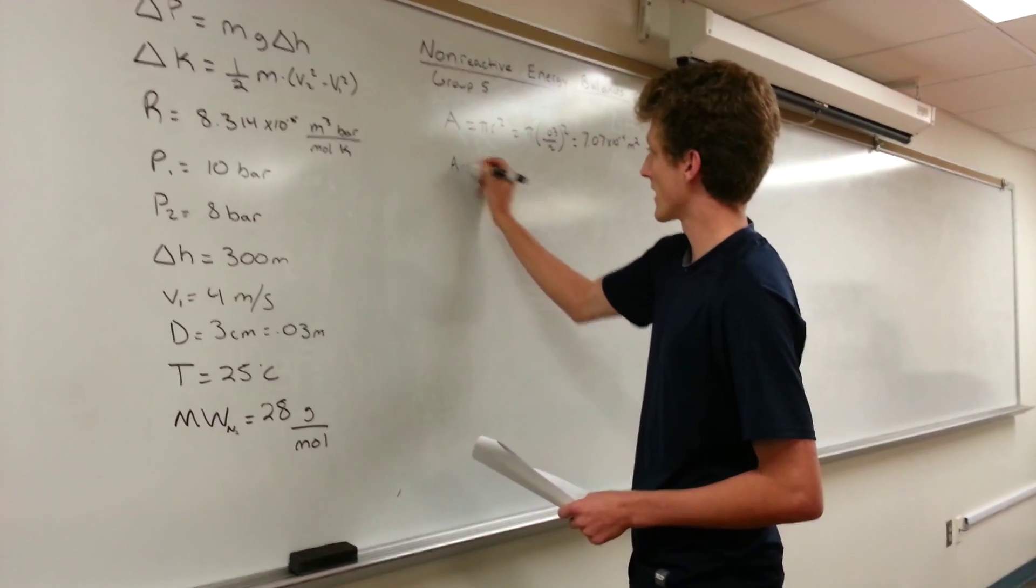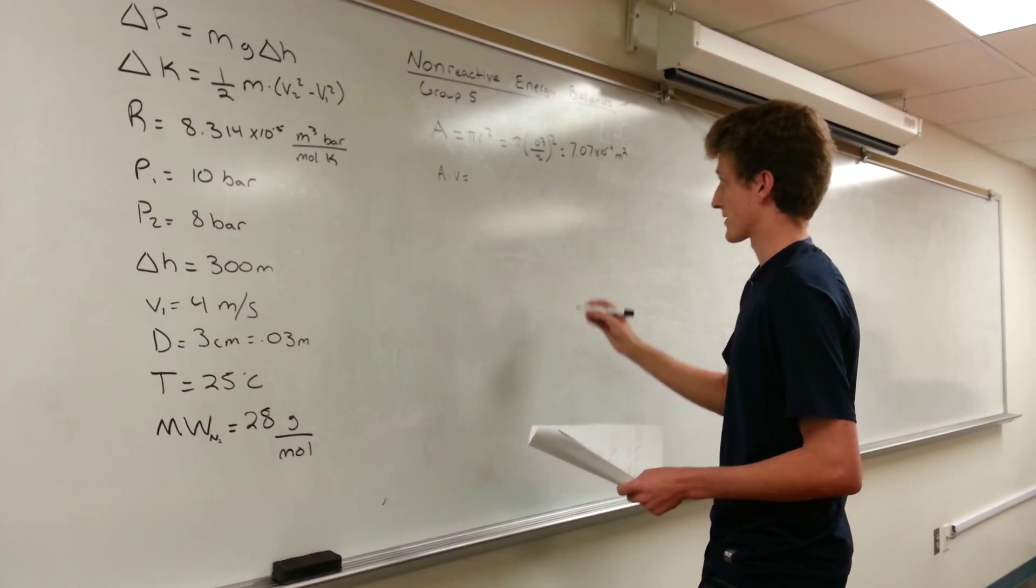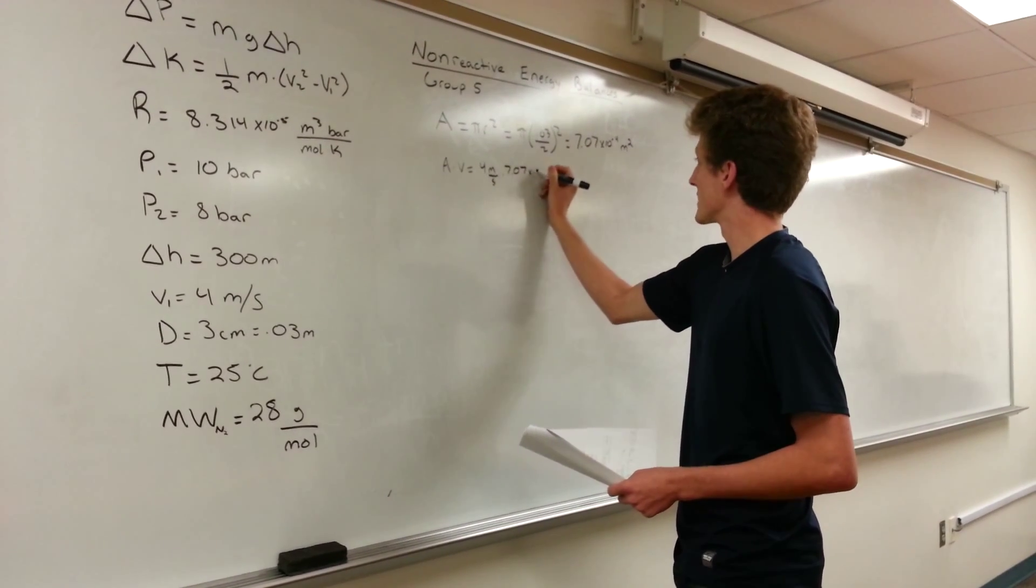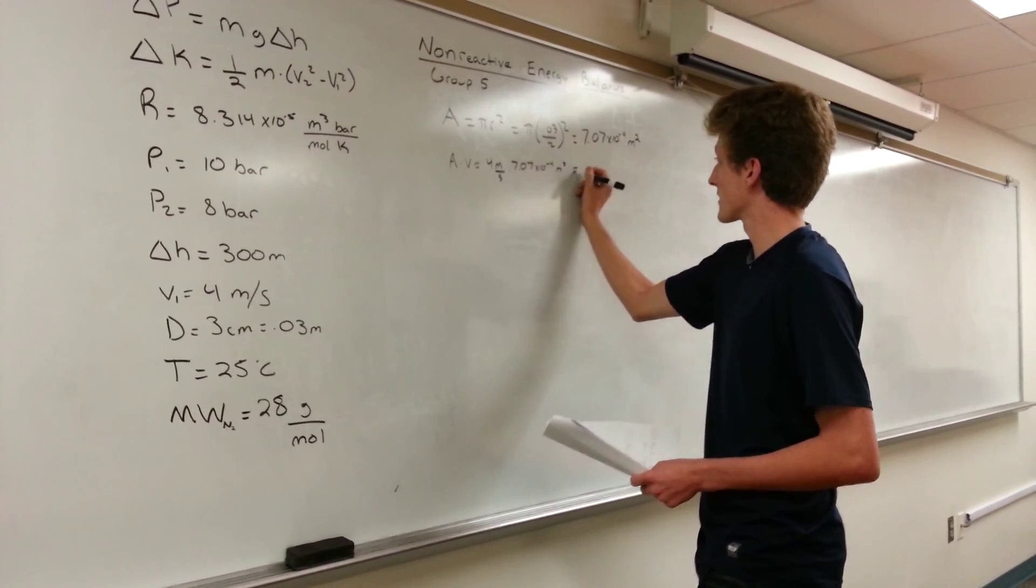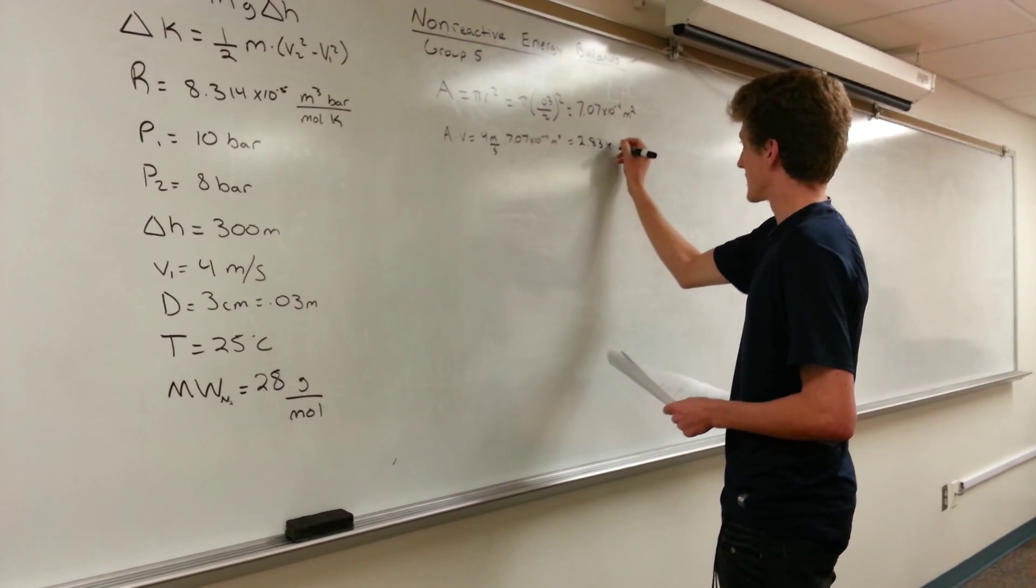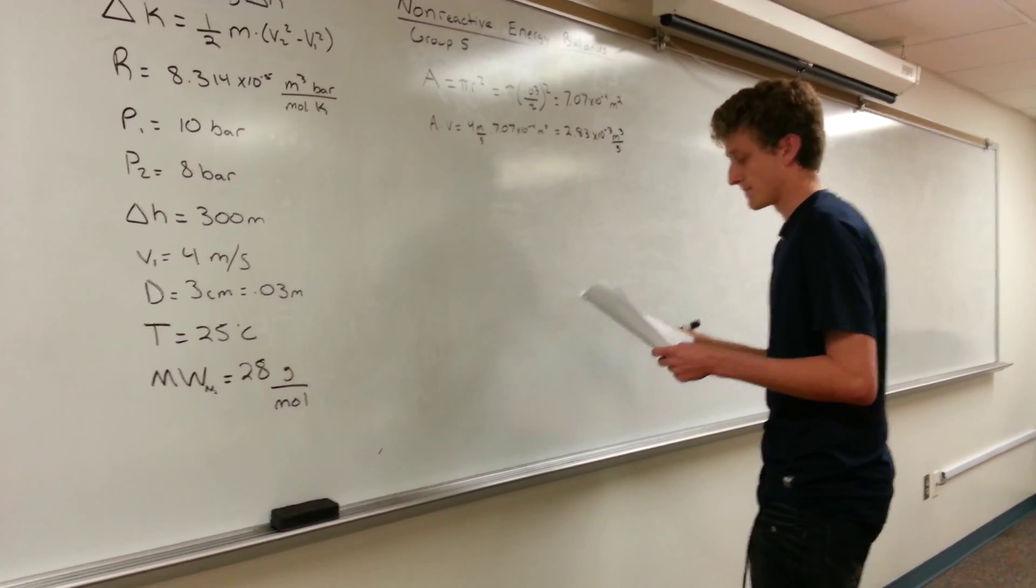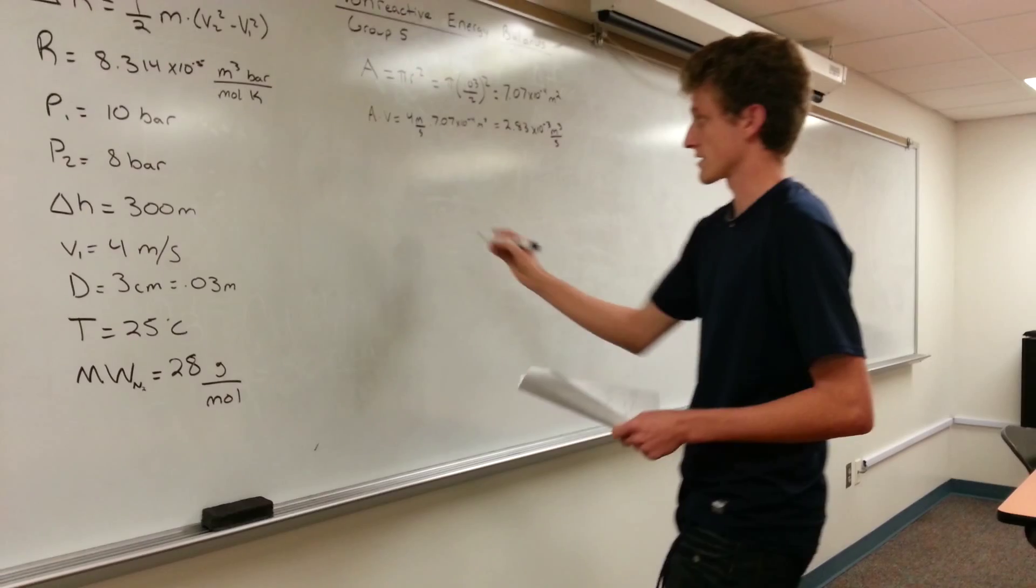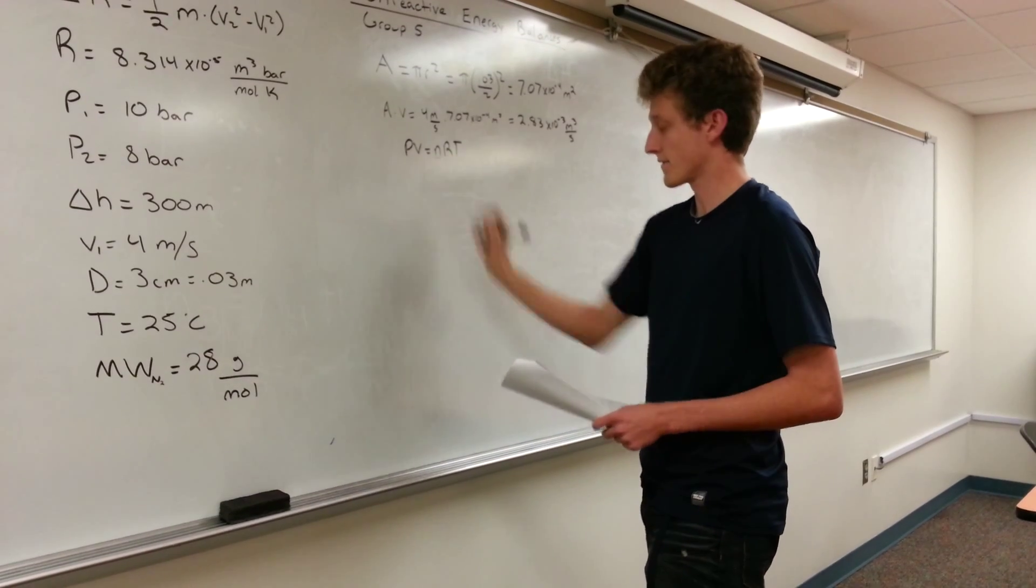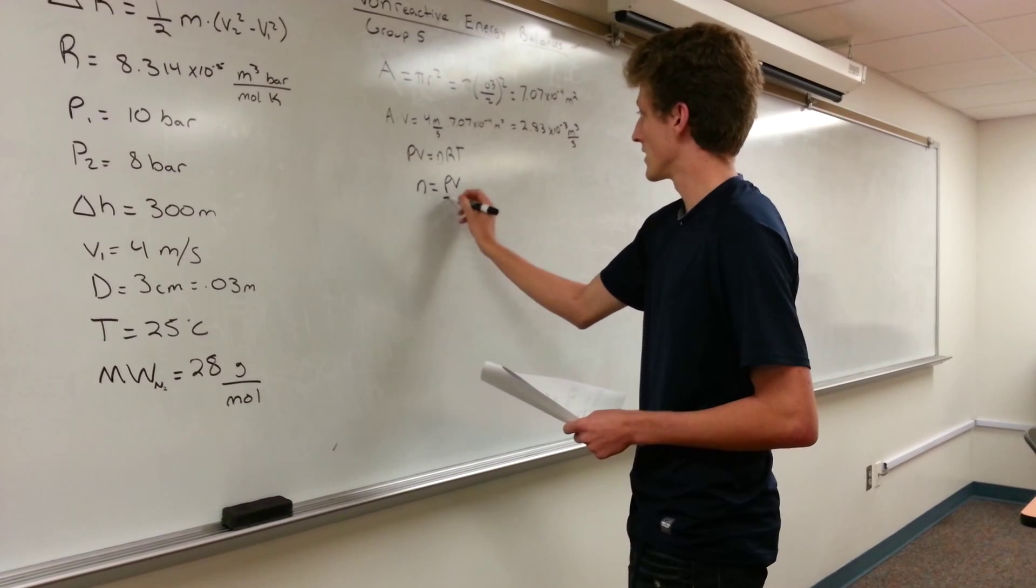This will give us a value of 2.83 times 10 to the negative 3 meters cubed per second. We then use the ideal gas law, PV equals nRT, and we solve for the number of moles. So n equals PV over RT.